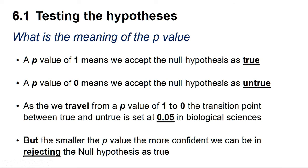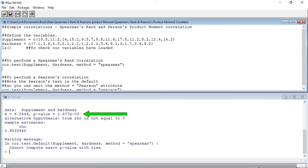But the smaller the p-value, the more confident we can be in rejecting the null hypothesis. And for some experiments, a transition p-value of 0.01 or even 0.001 may be preferable. So a p-value of 1.677 times 10 to the minus 9 is a very small probability, suggesting we can reject the null hypothesis. And our correlation is likely to be true.